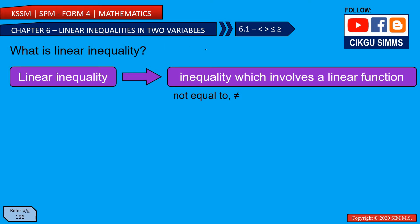We are very familiar with the equal sign. That means everything on the left side is equal to the right side. For example, we have 1 plus 1, which is equal to 2. So if we have an unknown and it is equal to 2, then we know that value is equal to 2.